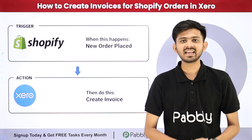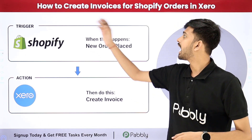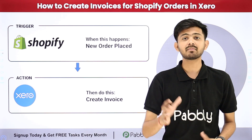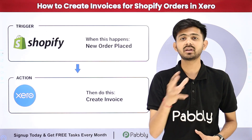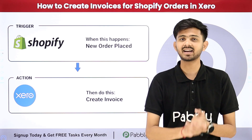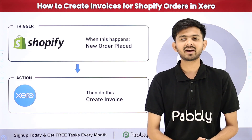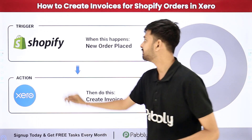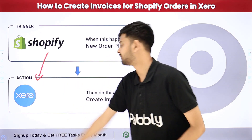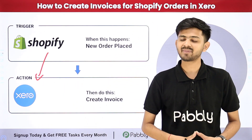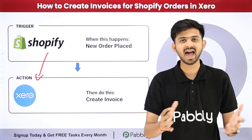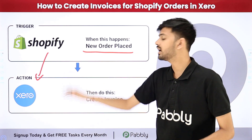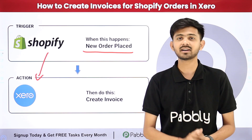Hello everyone, welcome back to Pabbly. Today our topic is how to create invoices for Shopify orders in Xero. As I am running my Shopify store, I automatically want to create invoices for all the orders I receive. For creating an invoice I am going to use Xero, and for doing this automatically I need to build a connection between Shopify and Xero. I am going to use Pabbly Connect, which is an amazing software for automation and integration. As I receive a new order from my Shopify store, I will automatically create the invoice for that order using Xero.